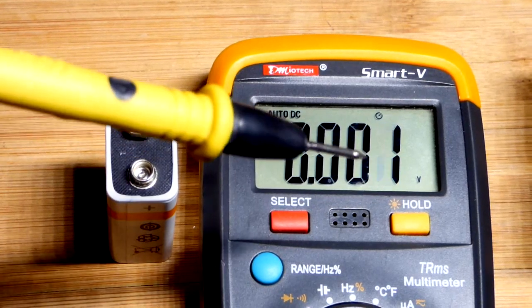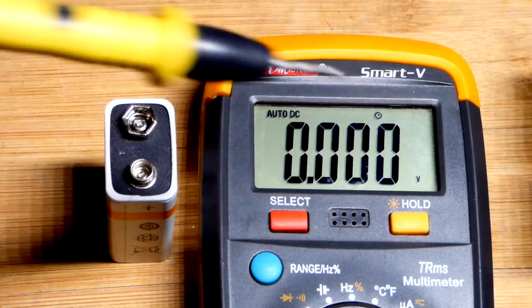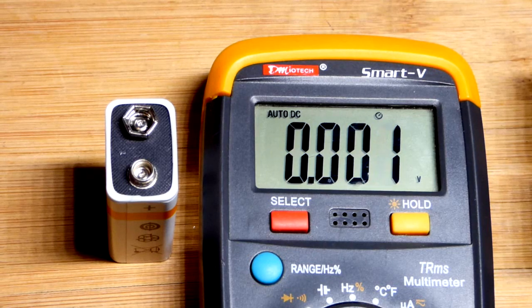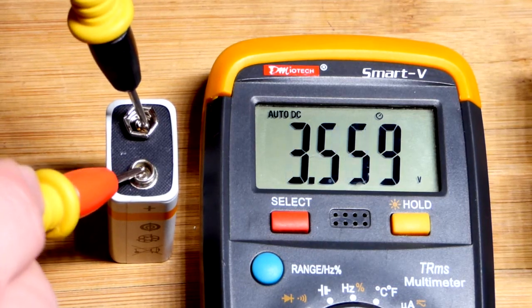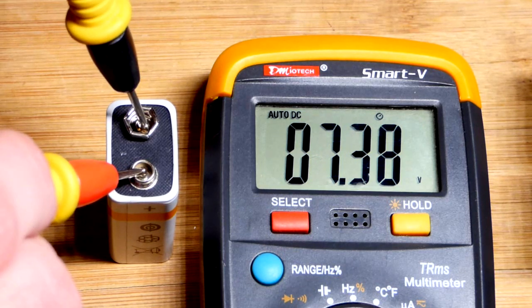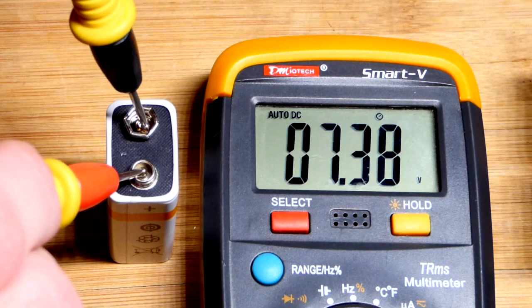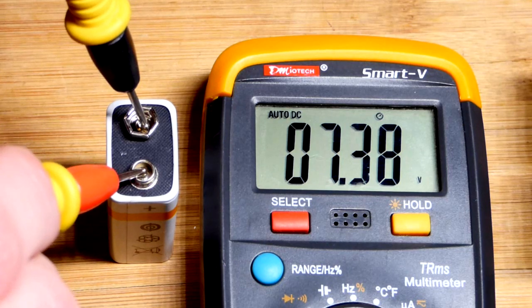I took this alkaline battery out of this multimeter because it was showing a steady low battery voltage. Now we can measure the voltage. This is the negative terminal. The black probe goes there, and the red probe goes to the positive terminal. So you can see it's about 7.4 volts.